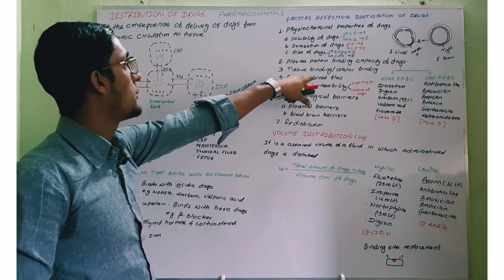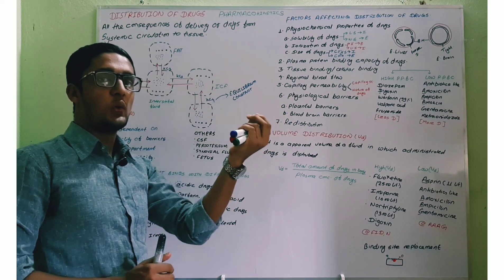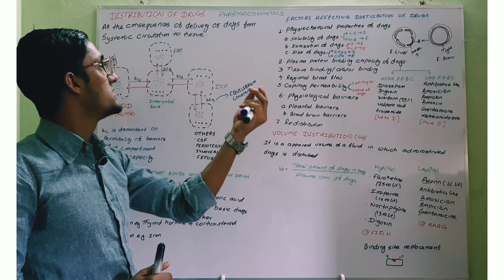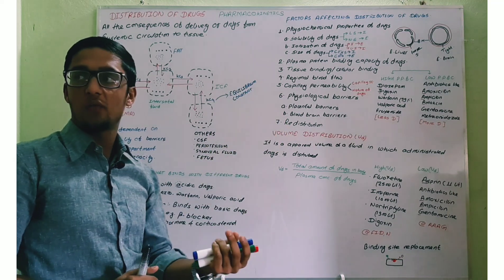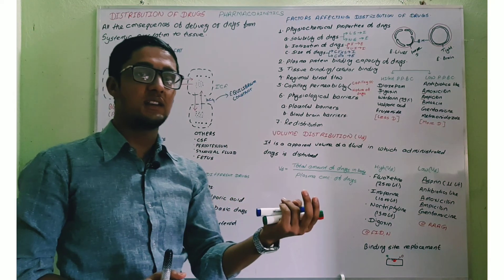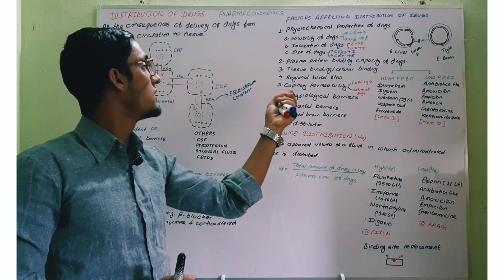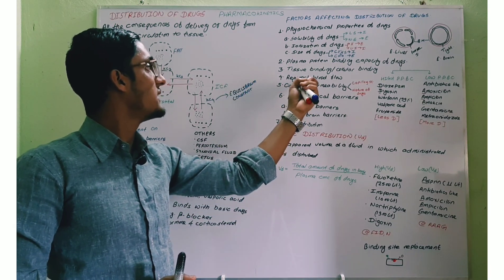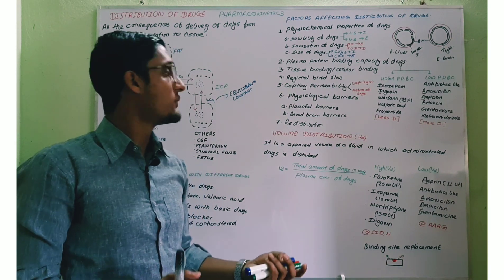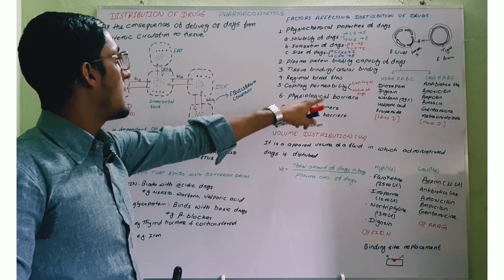Let us come to regional blood flow. Those organs which have high blood flow obviously have more distribution of the drug. The organs with high blood flow are heart, kidney, liver, and brain — distribution of the drug is more in these organs. The organs with low blood flow are adipose tissue and skeletal muscles, which have low distribution of the drug.